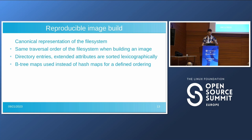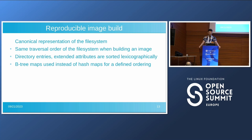Our next goal is to have reproducible image builds and a canonical representation of the file system. We define the same traversal order of the file system — for example, whether traversal is breadth-first or depth-first. We make sure directory entries and extended attributes are sorted lexicographically. As an implementation detail, we use B-tree maps because they have a defined order, unlike regular hash maps.